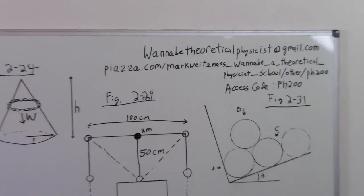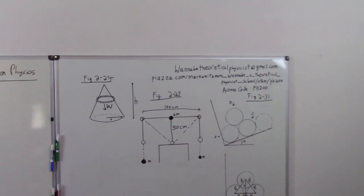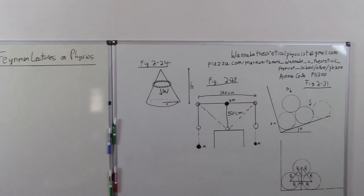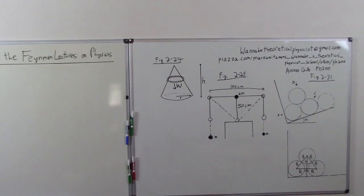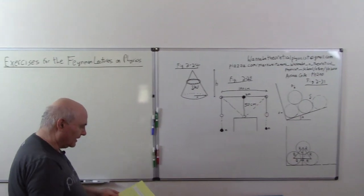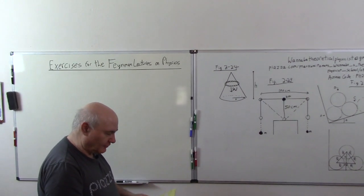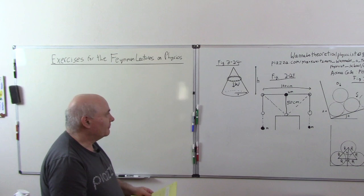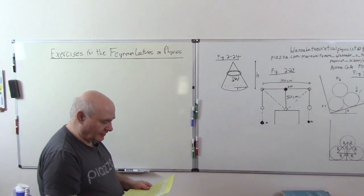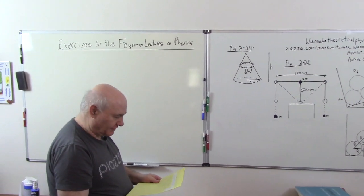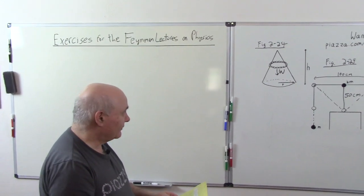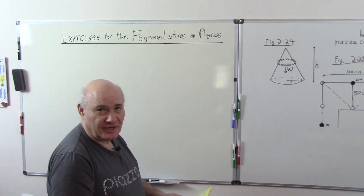Okay, so let me start with the problems. The first problem is 2-26 and I'll read it for you. It refers to this figure here. It says a loop of flexible chain of total weight W rests on a smooth right circular cone of base R and height H as shown in figure 2-24. The chain rests in a horizontal circle on the cone whose axis is vertical. Find the tension T in the chain. Neglect friction.